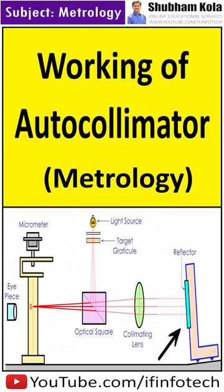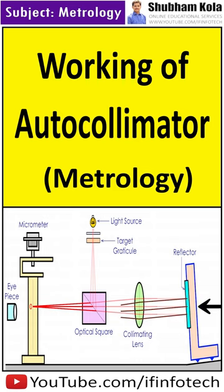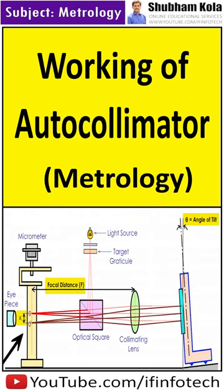And if the reflector is tilted to a small angle, then the reflected light will be displaced by twice the angle of tilt and will be brought into focus to point O', which is displaced by distance x. The distance x can be measured with the micrometer.